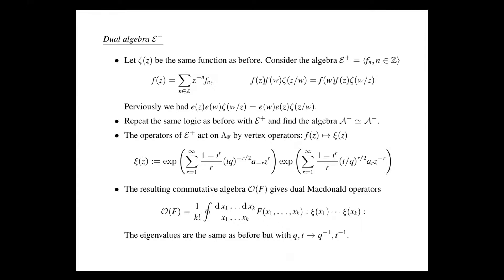So we have this dual algebra epsilon-plus. If we combine epsilon-plus and epsilon-minus, taking elements in the tensor product of the type with kernel one, these elements can be packaged into a generating function — a path-ordered exponential. I write this as a path-ordered exponential because when you take a representation of E and F by vertex operators, you can't evaluate it directly and then take the exponential; you must first expand the exponential and then evaluate it.